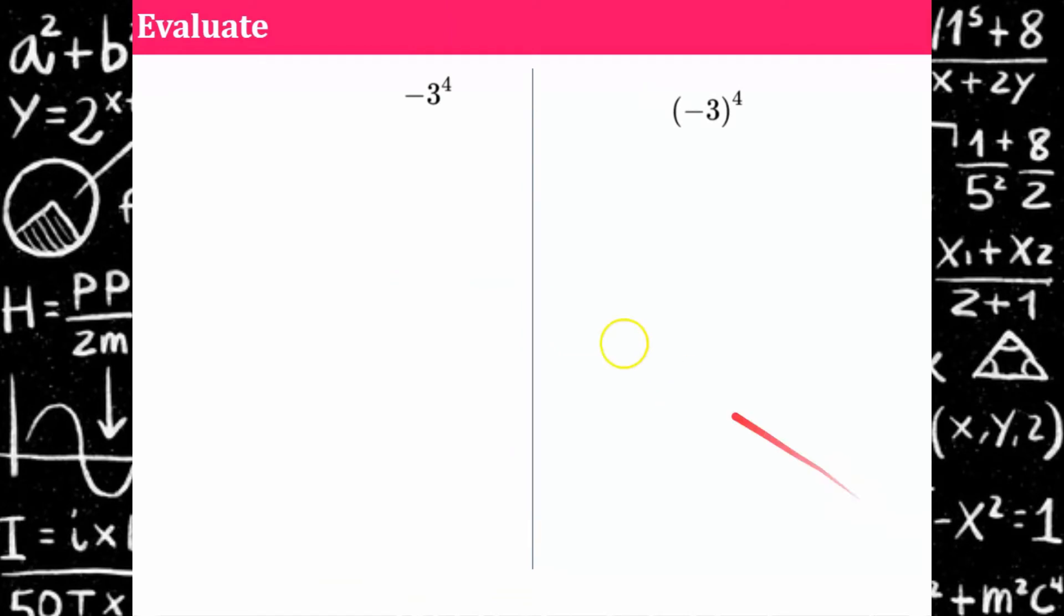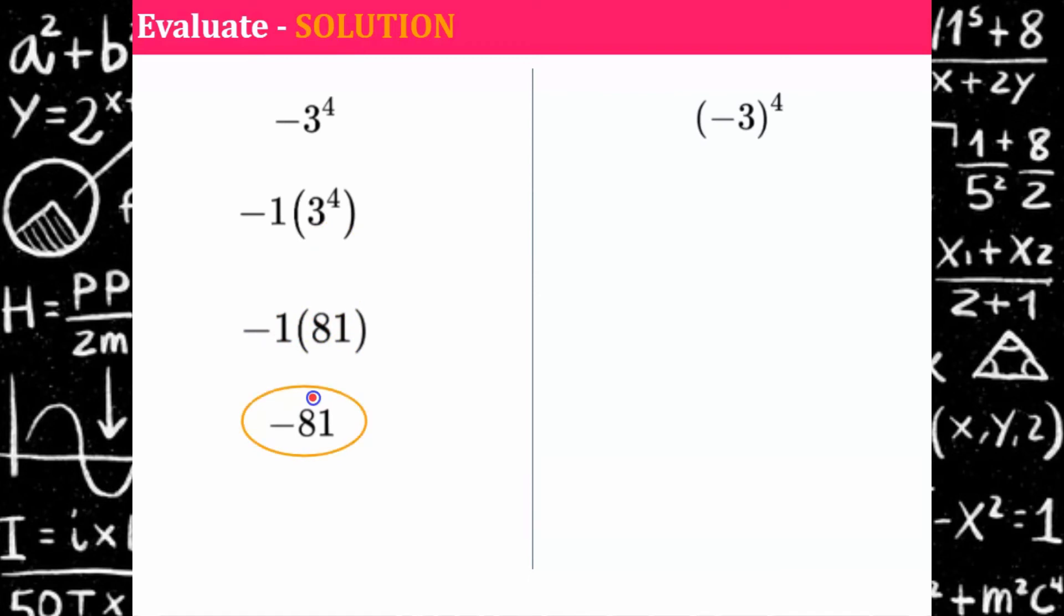All right, I would like you to evaluate both of these expressions. Go ahead and pause and come back and hit play when you're ready. Welcome back. Let's see how you did. So did you remember about the invisible one? So this is negative one because there's no parentheses here. So my base is not negative three, my base is three. So this power is really negative one to a power three to the fourth. So the base is positive three and the exponent's four. Three to the fourth is 81, 81 times negative one is negative 81.